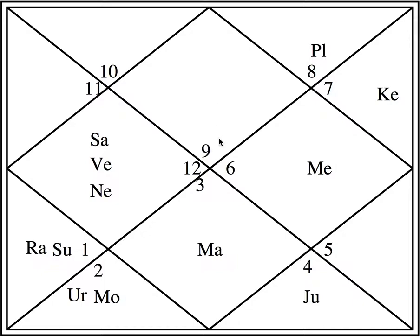Now how do you analyze the chart regarding the house lords? In each house, see what sign is placed there. Again let me remind you — this is not the ninth house, this is the first house. This will always be the first house irrespective of whether nine, five, six, seven, or four is written there. Any number can be there from one to twelve in any of the houses.